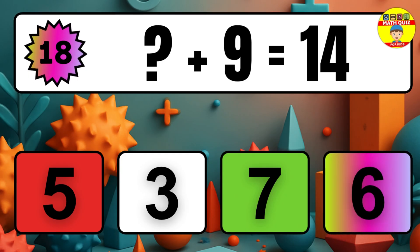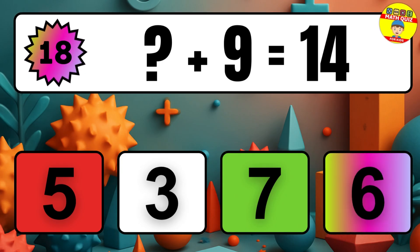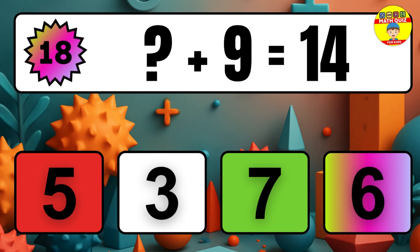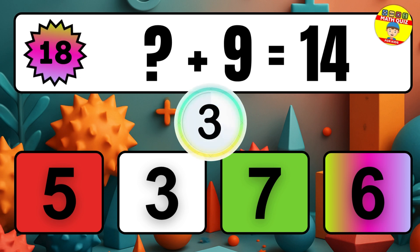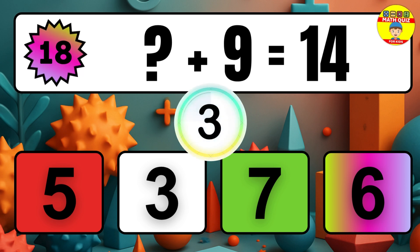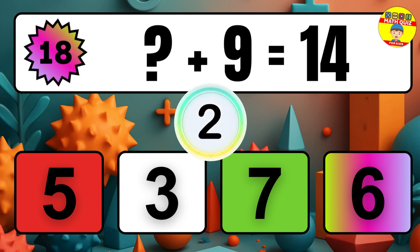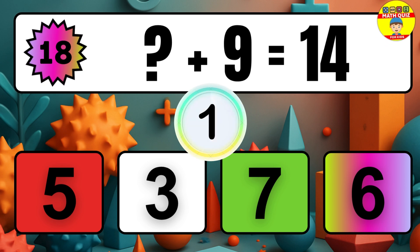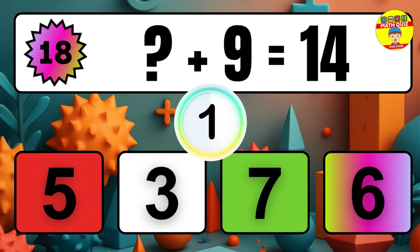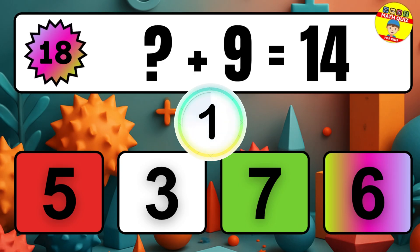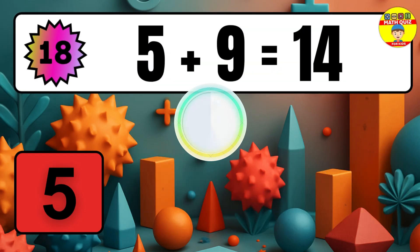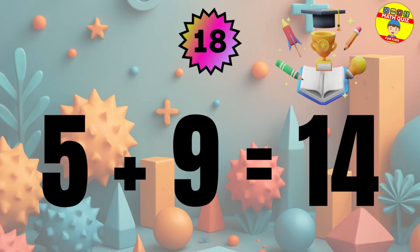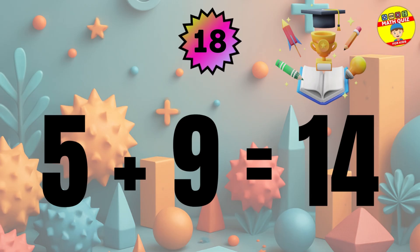Question 18. What number plus 9 equals 14? The missing number is 5.